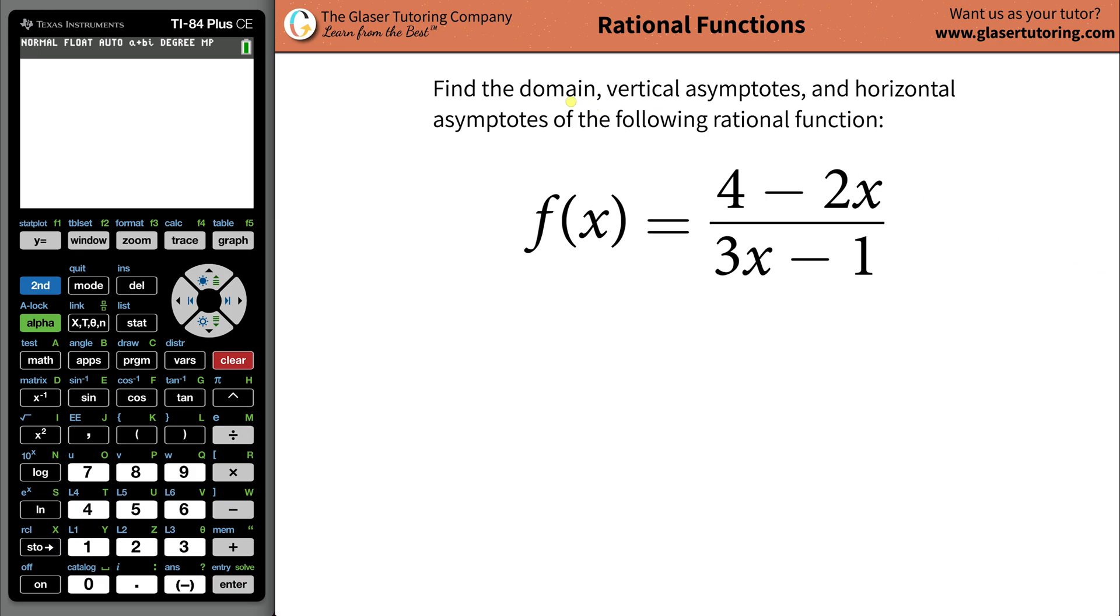Hi-de-ho, Andrew here. Today I would like to teach you how to find the domain, vertical asymptotes, and horizontal asymptotes of this rational function: f(x) = (4 - 2x) / (3x - 1).